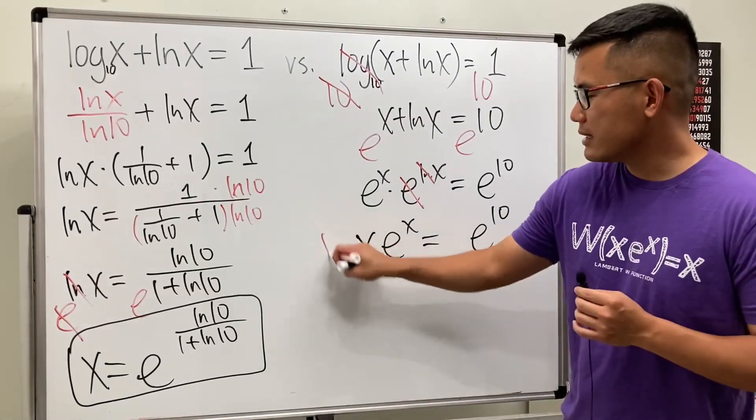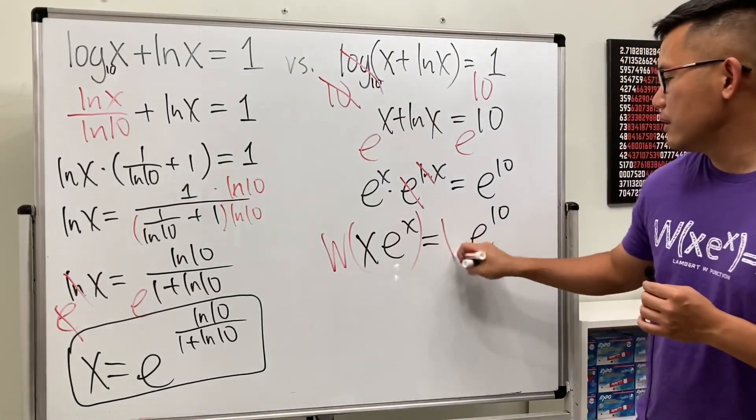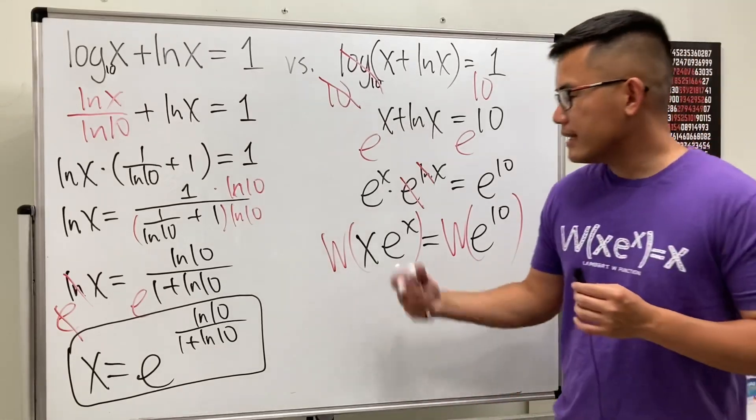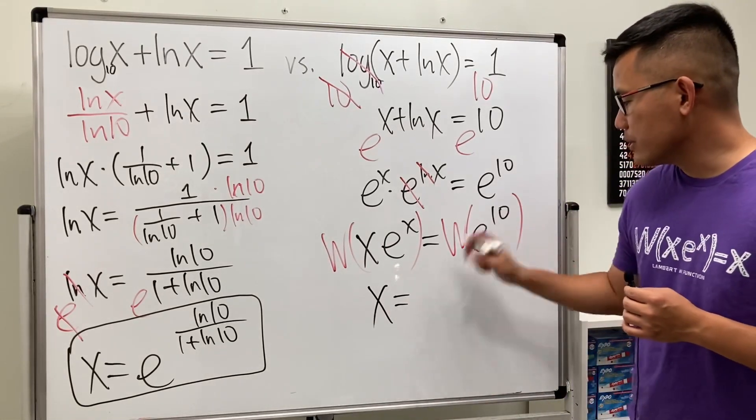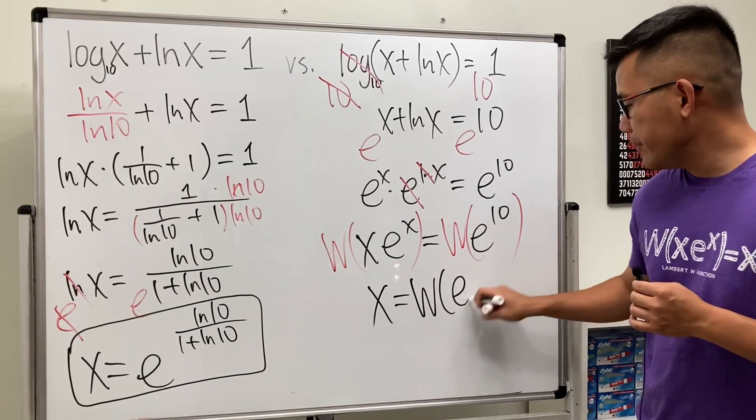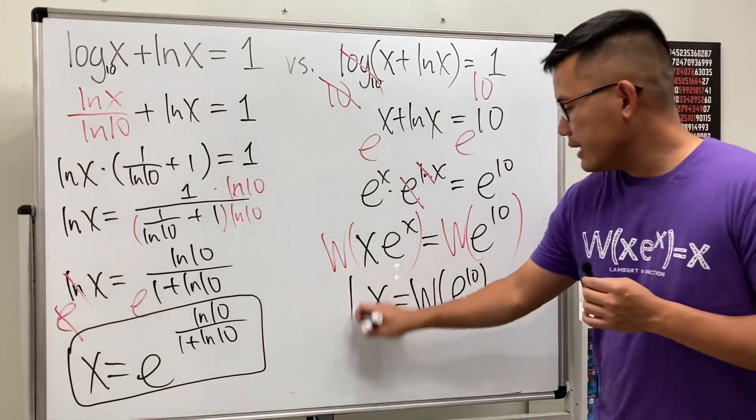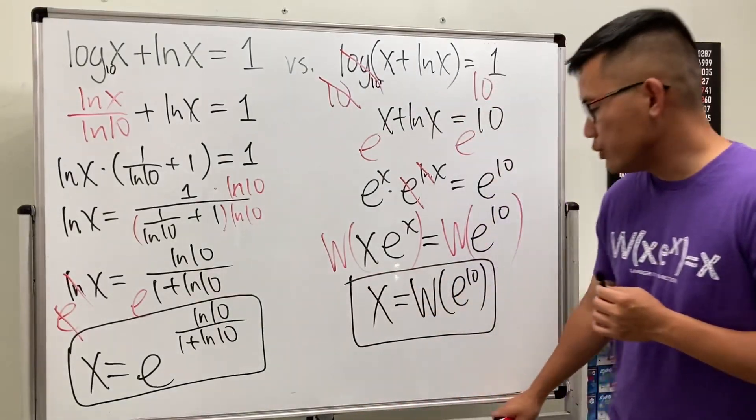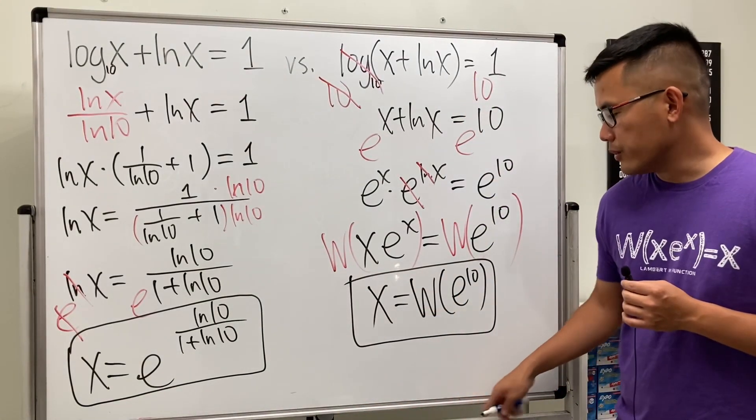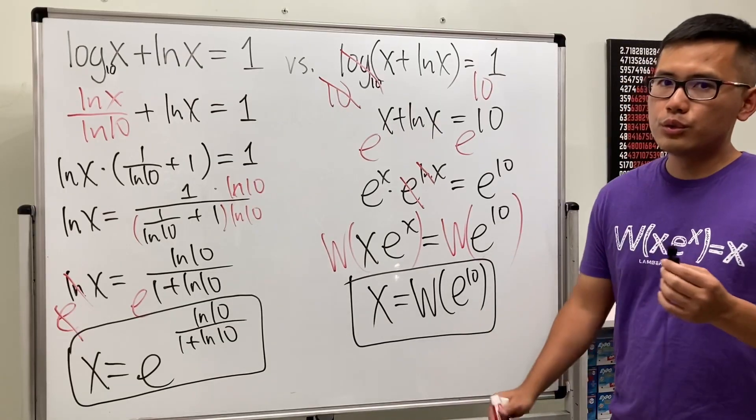And finally, we just have to take the Lambert W function. So that the left-hand side will just get the x back. And this right here is just equal to W of e to the 10th power. And this right here will be considered the exact answer. If you want to use a computer to work this out, you can use Wolfram Alpha.